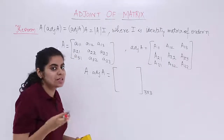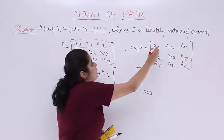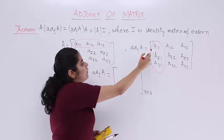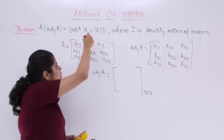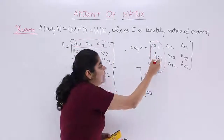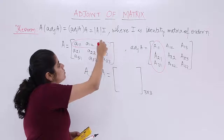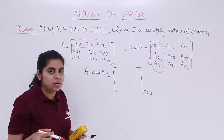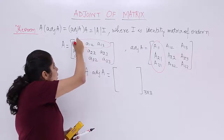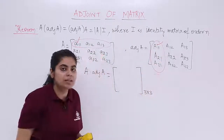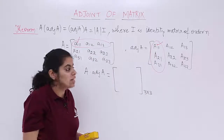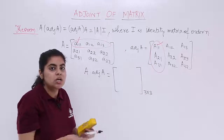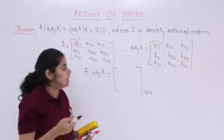Using this concept to solve the multiplication A into adjoint A: take the first row of A and the first column of adjoint A. We get a11·A11 + a12·A21 + a13·A31. Since these elements are multiplied in matching fashion, the result is determinant of A. The mismatched terms like a12·A21 give 0, so this position yields only det(A).